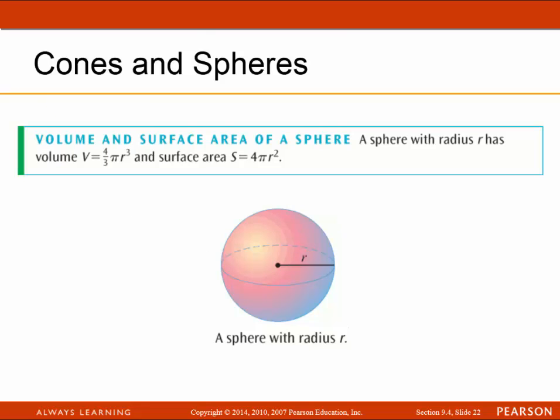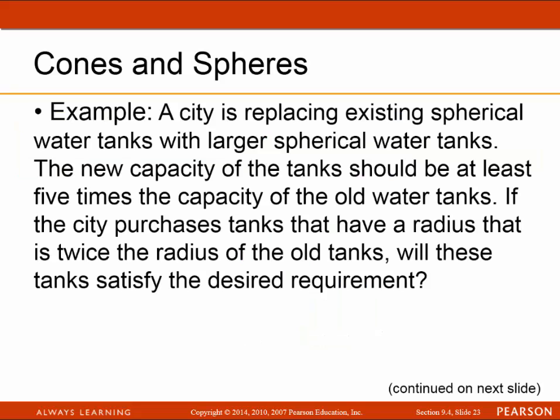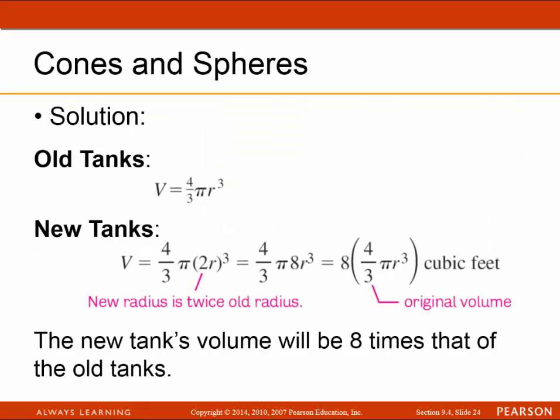Now let's look at a sphere. A sphere with radius R has a volume of four-thirds pi R cubed and a surface area of 4 pi R squared. For example, a city is replacing existing water tanks with larger ones. The new capacity must be at least five times the old capacity. If the city purchases tanks with a radius twice that of the old tanks, the new volume is 4/3 pi times (2r) cubed, which equals 8 times the original volume. So the new tanks hold 8 times the volume of the old tanks, which satisfies the city's requirement.